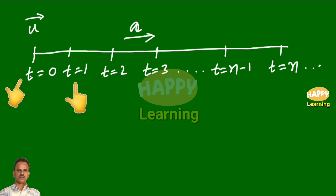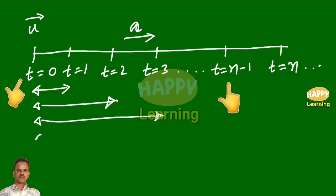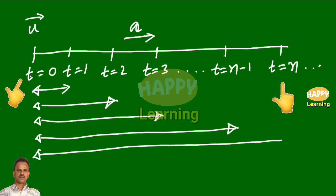The distance traveled in one second is given by this value — from t equal to 0 to t equal to 1. This is the distance traveled in one second, and this is the distance traveled in two seconds. From the beginning, this is the distance traveled in three seconds. Like that, this is the distance traveled in n minus one seconds. So, displacement in one second, two seconds, three seconds, n minus one second, n seconds — this is all measured from the beginning.